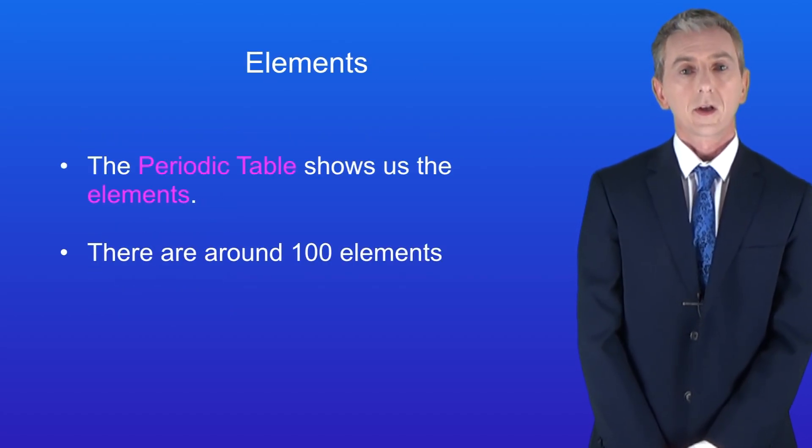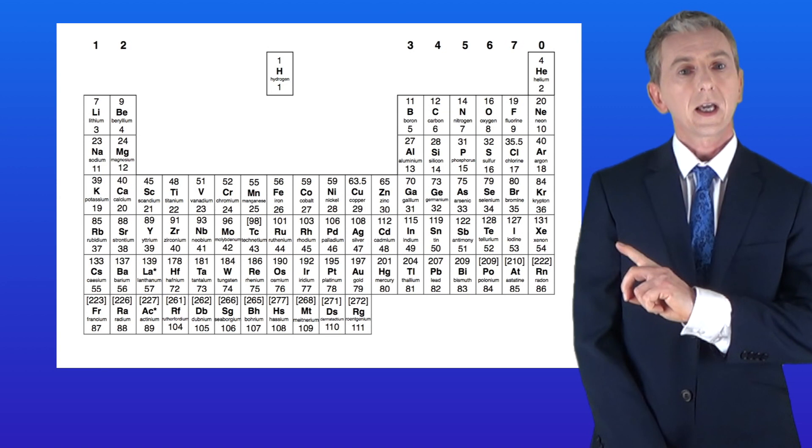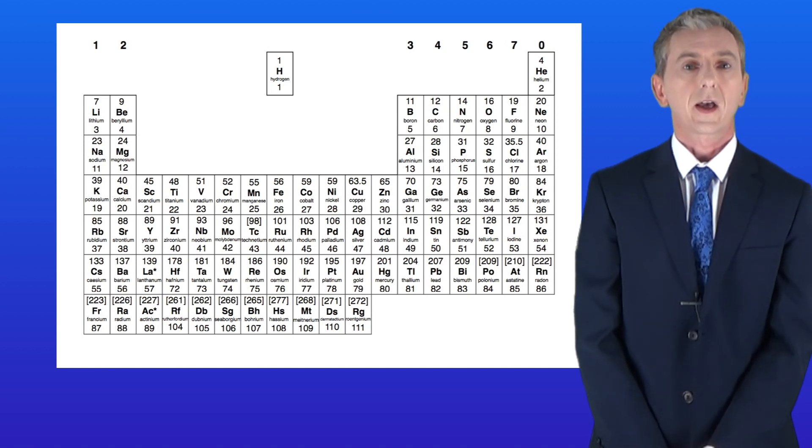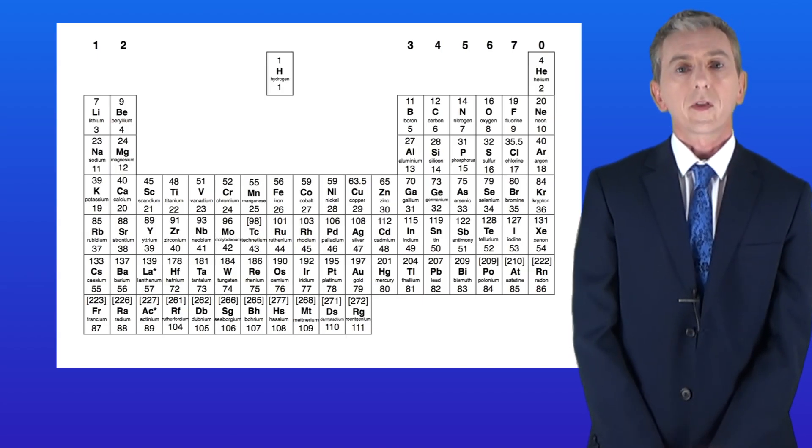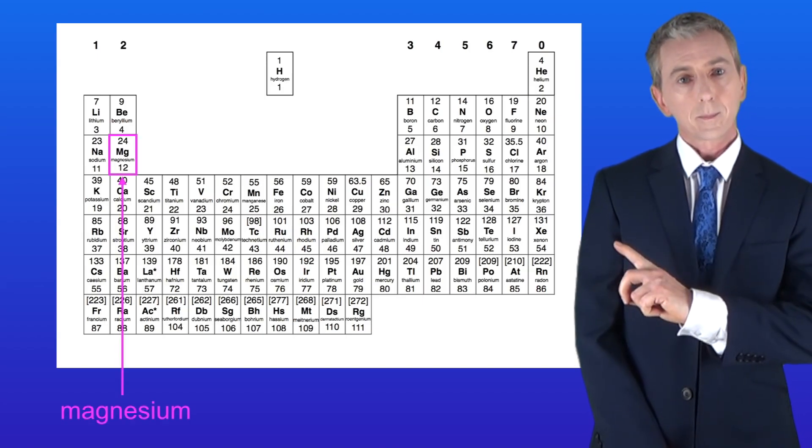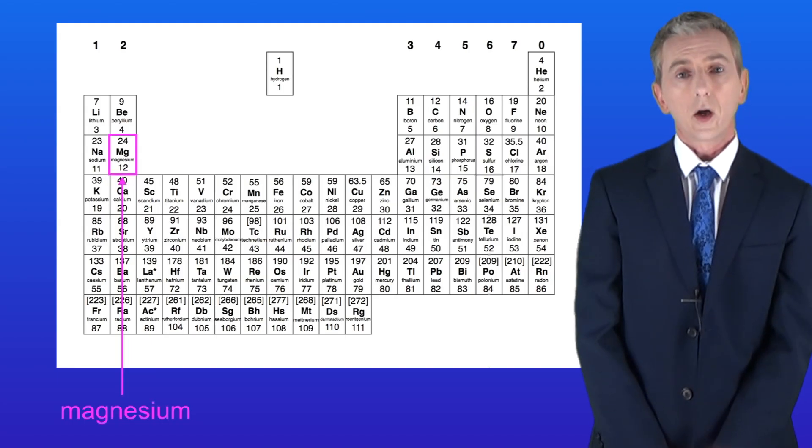Let's start by looking at elements. The periodic table shows us all the elements and there are around a hundred of them. Here's the periodic table and you are given a copy of this in your exam. Each of these symbols represents a different element. So for example we've got the element magnesium over here and the element sulfur over here.